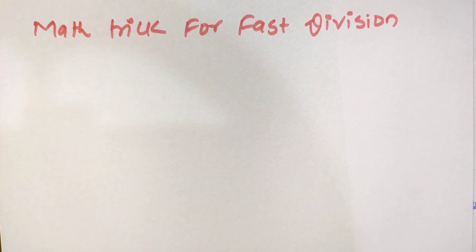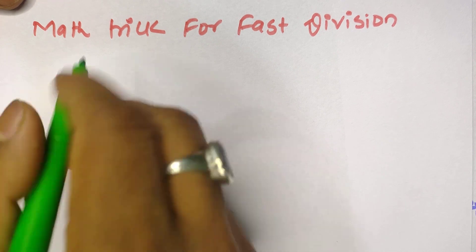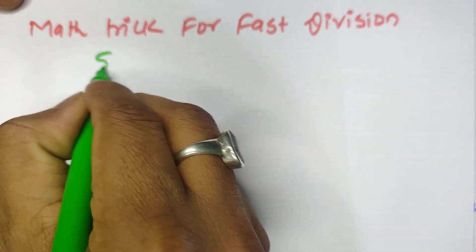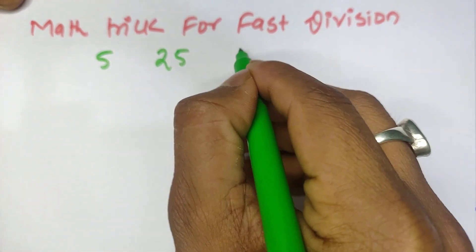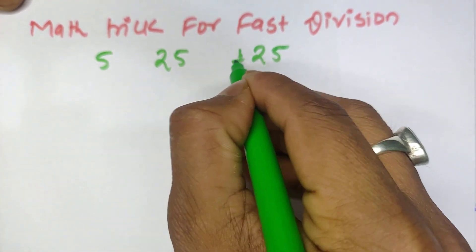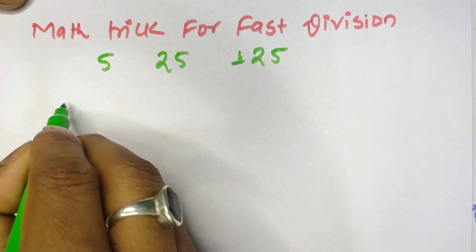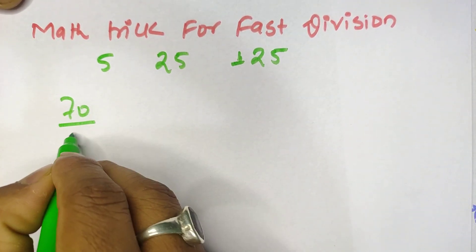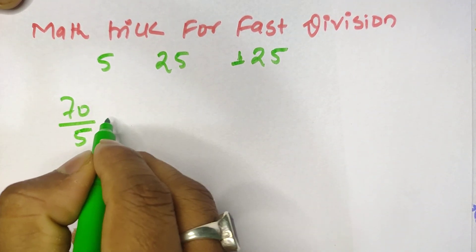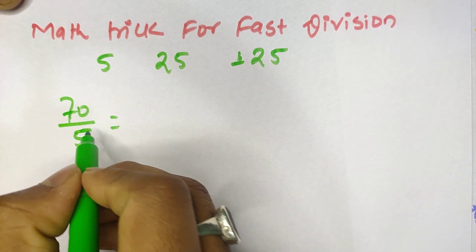Hello everyone, welcome to a new video. Today we are going to divide numbers by 5, 25, and 125. Let's begin with our first example: 70 divided by 5.